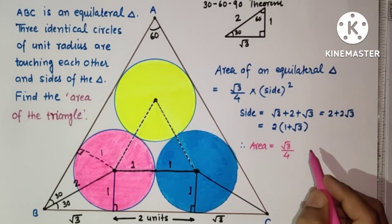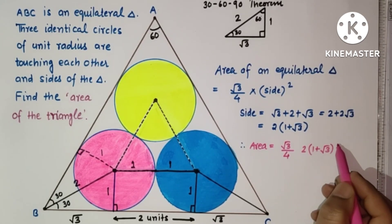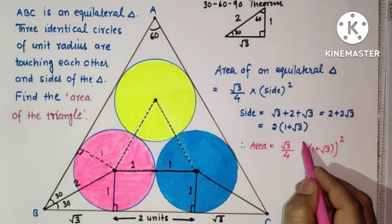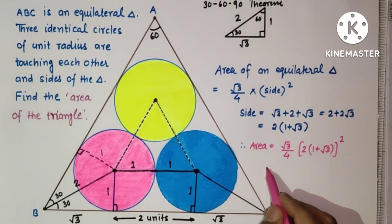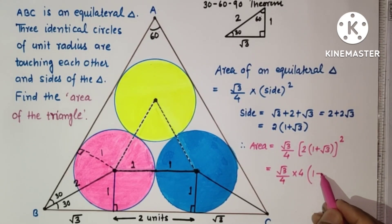Side square, that is equal to root 3 by 4. 2 square is 4, 1 square is 1 plus root 3 square is 3 plus product of these 2 into 2. These 2, 4 and 4 will get cancelled.